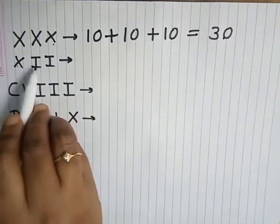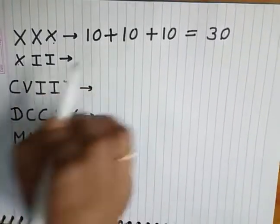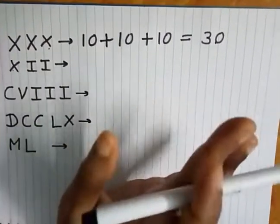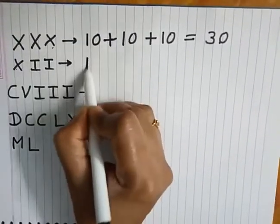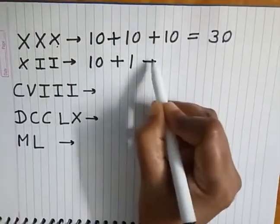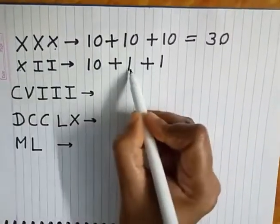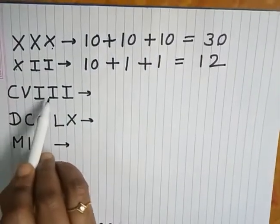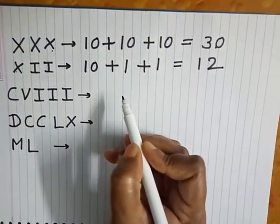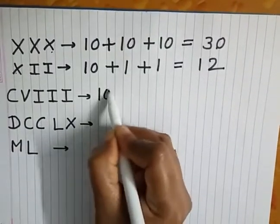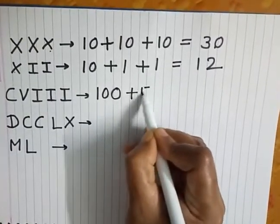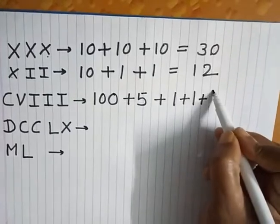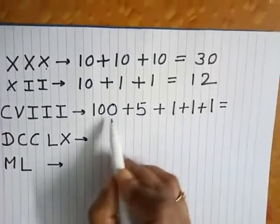Next example: XIII. X means 10, and I can be repeated in addition, so I written two times gives 1 plus 1. Therefore XIII equals 10 plus 1 plus 1 equals 12. Next: CVIII. C is 100, V is 5, and I repeated three times is 1 plus 1 plus 1 equals 3. So CVIII equals 100 plus 5 plus 3 equals 108.